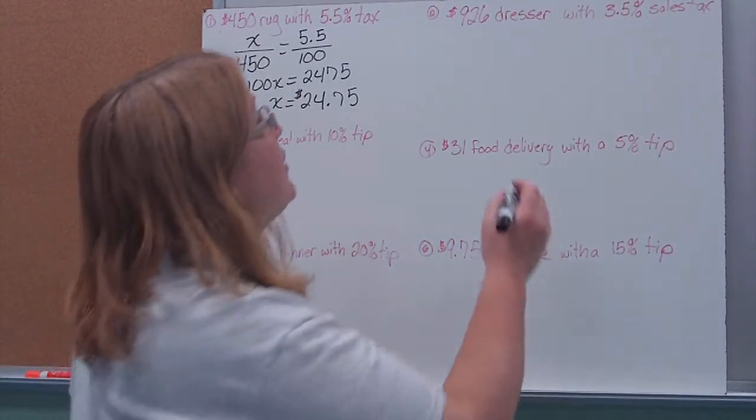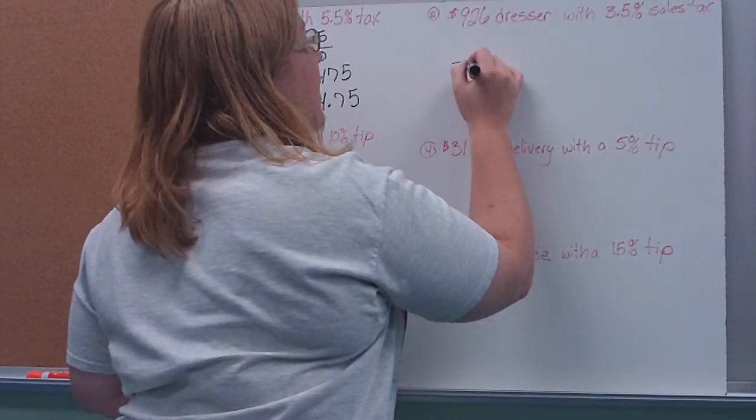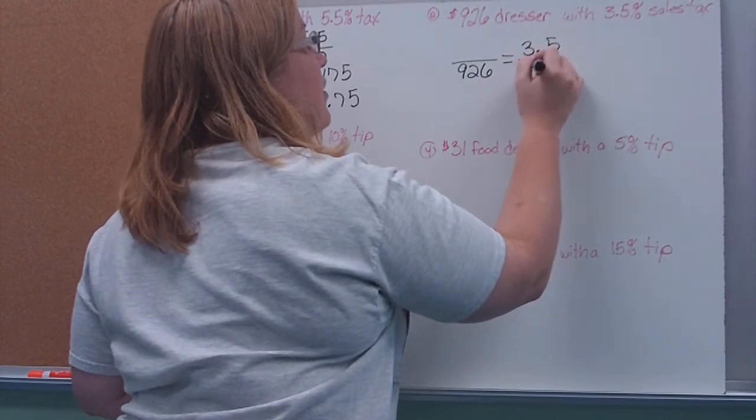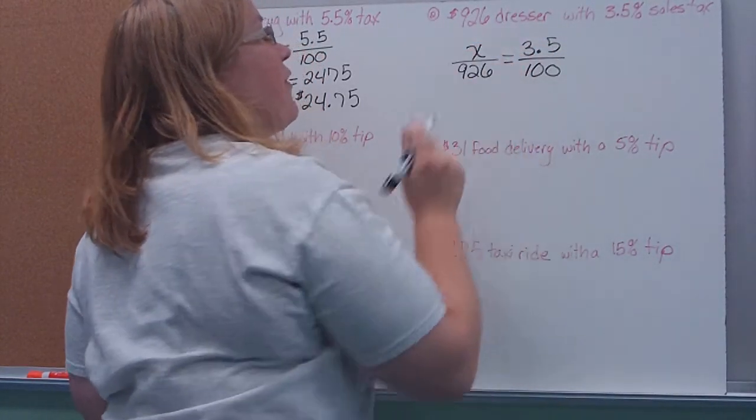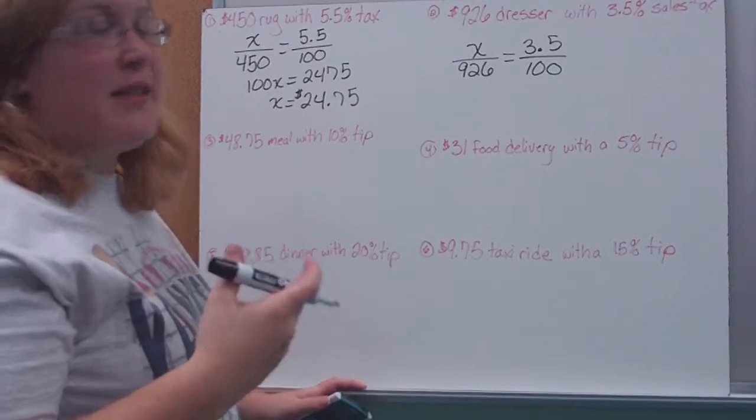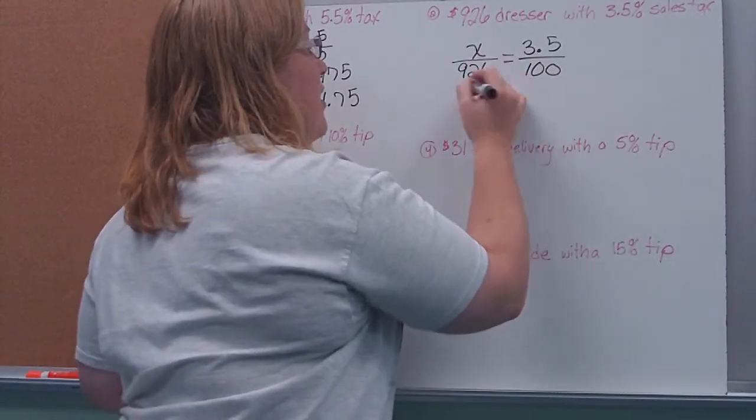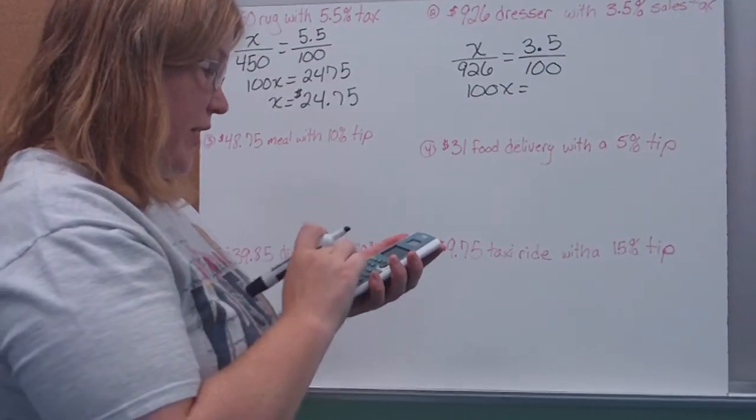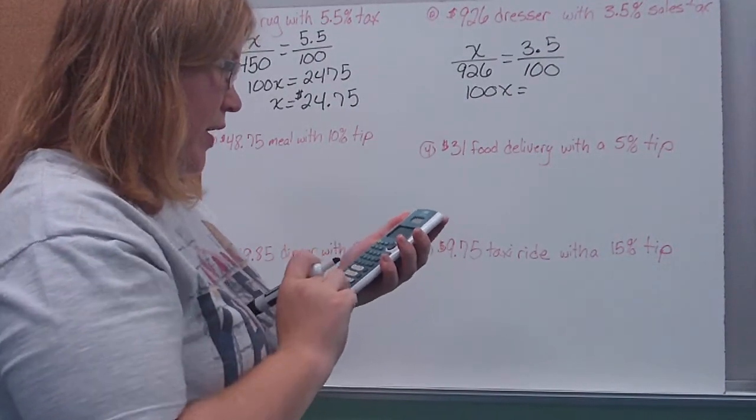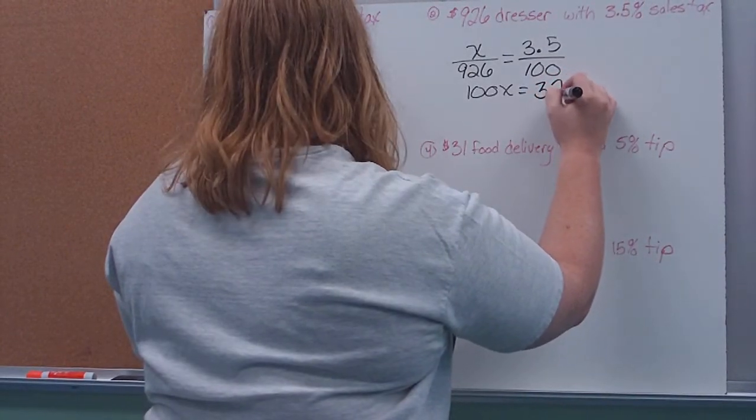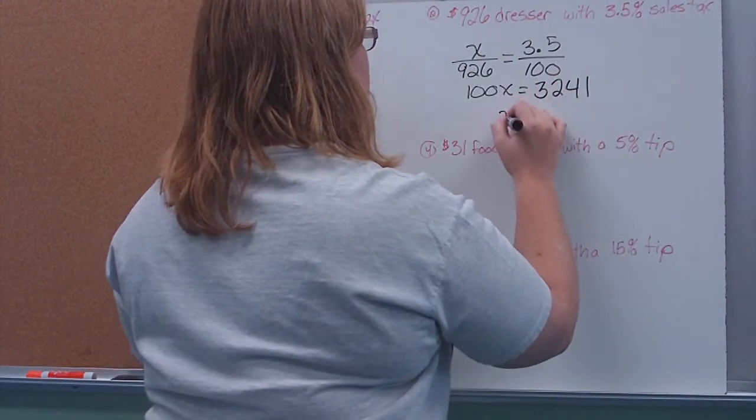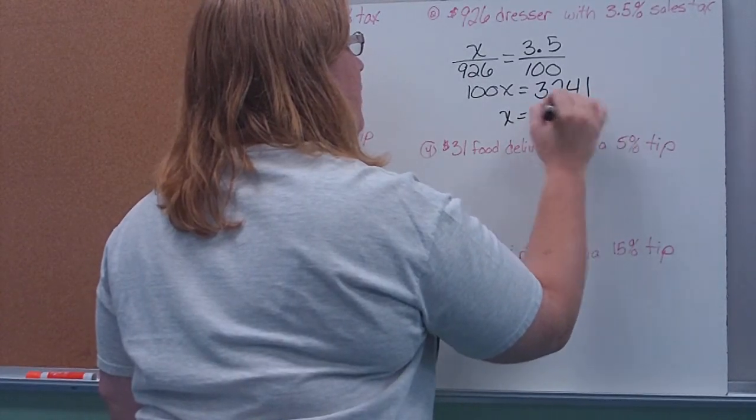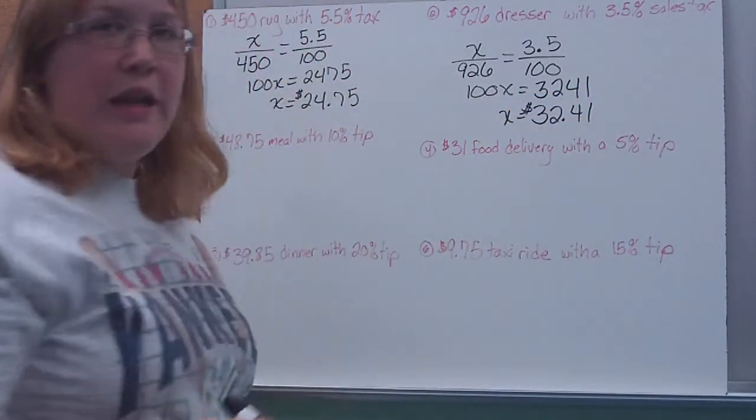All right. So over here, a $926 dresser, well, that's its cost. 3.5% rate, that goes over 100. I'm solving for how much extra money is that sales tax? So again, we're going to cross multiply. Again, I'm going to use my handy-dandy calculator because I cannot do that one in my head so quickly. And what do we solve? We find that it is $32.41 in tax.